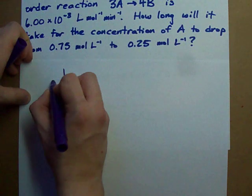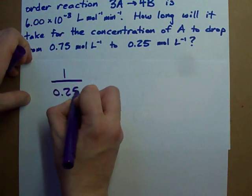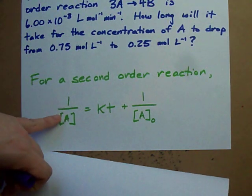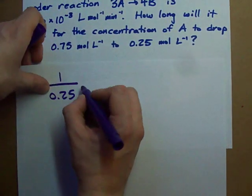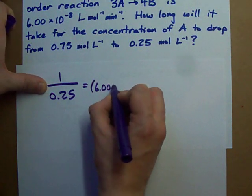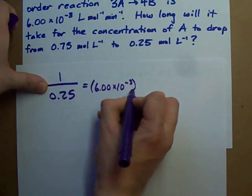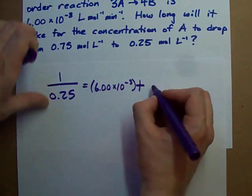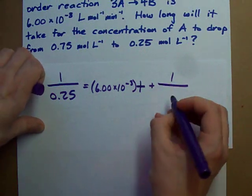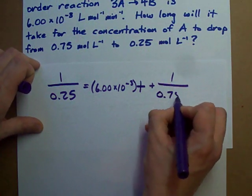So, 1 over 0.25. I'm going to leave my units off. 1 divided by my reactant concentration equals my rate constant, 6.00 times 10 to the negative 3, times time, plus 1 over my initial concentration. That's 0.75.